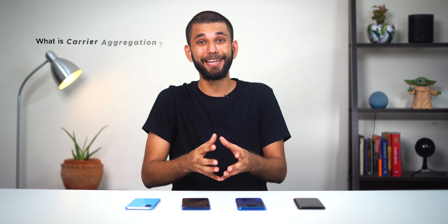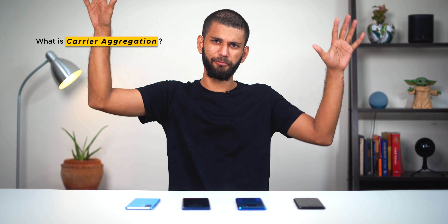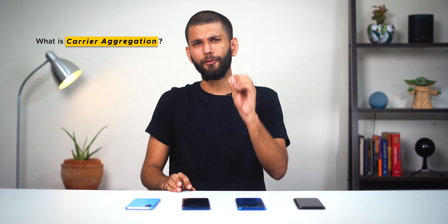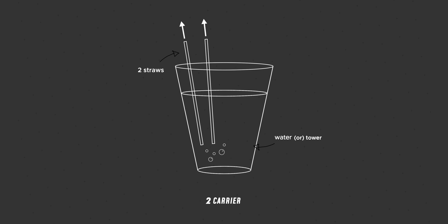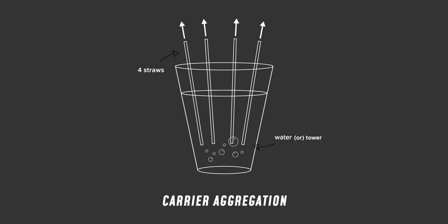In order to understand how good Carrier Aggregation your phone has, we need to first understand what Carrier Aggregation basically is. Carrier Aggregation sounds like a fancy name, but here's a simple example: if you want to drink water from a bottle, you put a straw and drink it — that's one carrier. If you want to drink more water, you use two, three, or even four straws. That's Carrier Aggregation — the use of multiple carriers, straws, or frequencies at once for better internet access.